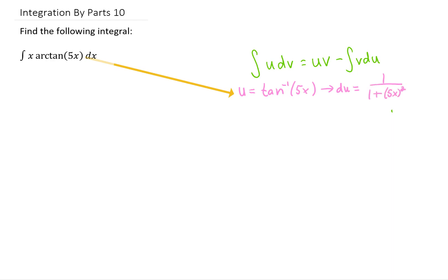Taking a derivative of that is going to give us our du, but don't forget that we need to use the chain rule. Putting all that together gives us that our du is 5 over the quantity 1 plus 25x squared. Looking back at our original integral, we'll notice that what we have left for dv is x dx.